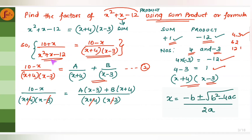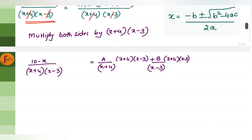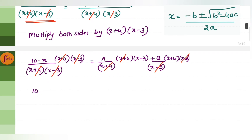We substitute x squared plus x minus 12 with the factors x plus 4 and x minus 3. We split the fraction as A over x plus 4 plus B over x minus 3. Multiplying both sides by x plus 4 and x minus 3, the factors cancel, leaving: 10 minus x equals A times x minus 3 plus B times x plus 4.